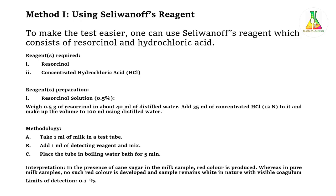Without any further delay, let us talk about the test we are going to perform. We are going to check for adulteration of cane sugar in our milk sample. For this, we will do Seliwanoff's test, using Seliwanoff's reagent. What do we require? We require Seliwanoff's reagent, which has two main components: resorcinol, as you can see on screen, and concentrated hydrochloric acid — HCl — which is a mineral acid and a very important chemical for this test.